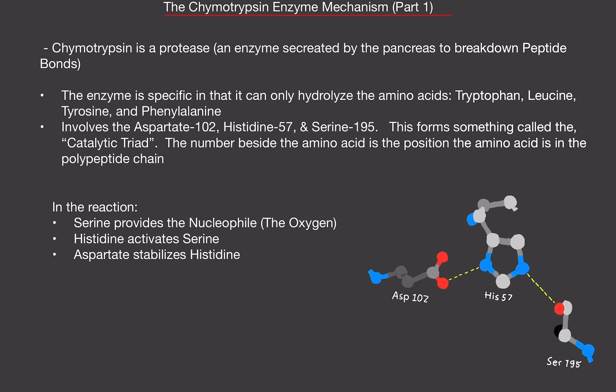Chymotrypsin involves the aspartate-102 amino acid, histidine-57 amino acid, and serine-195. What does this mean? Well, the actual chymotrypsin molecule, the enzyme itself, is made up of these three amino acids. The number after the amino acid - so 102, 57, 195 - is just the placement of that specific amino acid in the polypeptide chain.